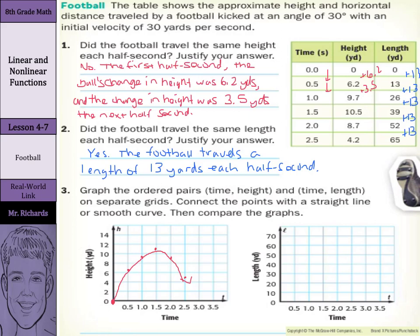Next we have our length. We have zero seconds, zero yards. Half a second, 13 yards. One second, 26 yards. One and a half seconds, 39 yards. Two seconds, 52 yards. And two and a half seconds, 65 yards. So we can connect these with a straight line.